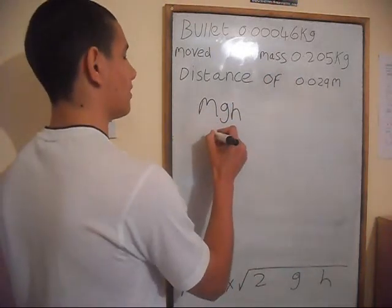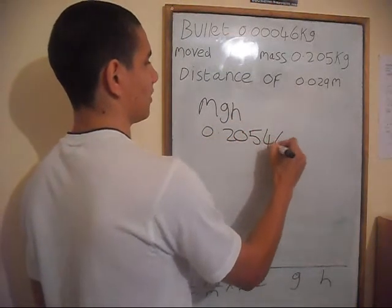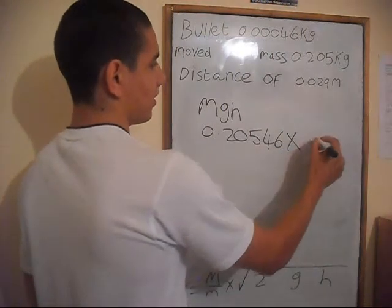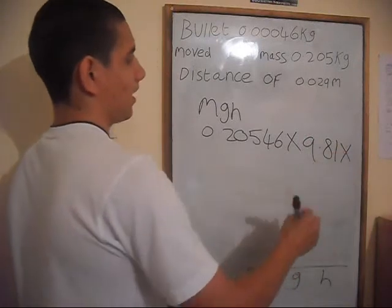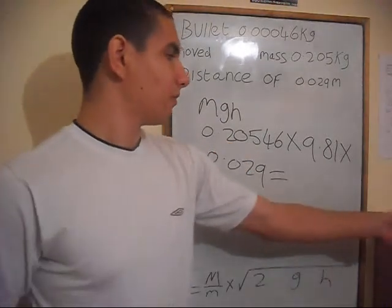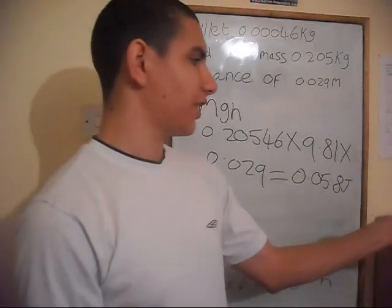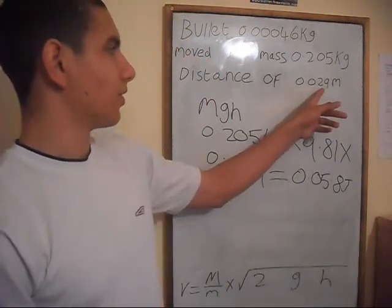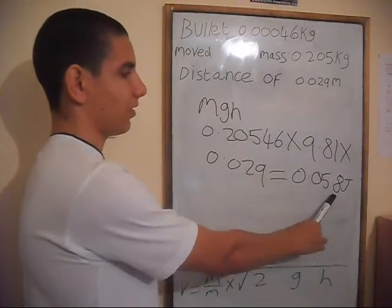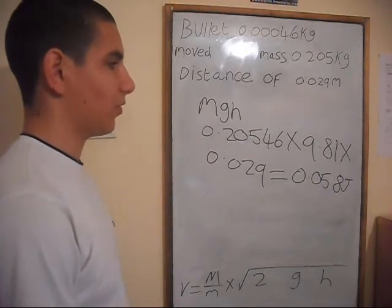MGH being M = 0.20546 kilograms — the bullet mass plus the block's mass — times G = 9.81, times H, the height it was moved up, 0.029 metres. When put into a calculator, this gives 0.058 joules, which is the gravitational potential energy of the block at a height of 0.029 metres. If all the energy was conserved in transfer from the bullet to the gravitational potential energy of the block, then the gravitational potential energy of the block equals the kinetic energy the bullet had before moving the block.